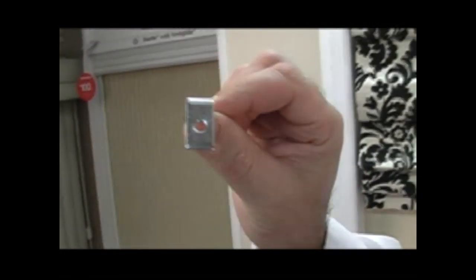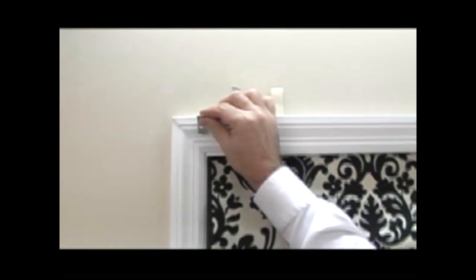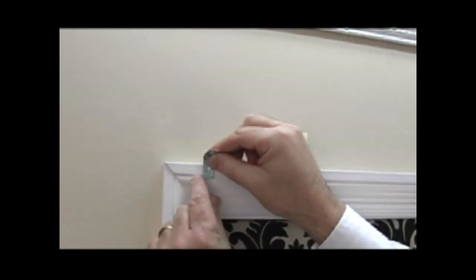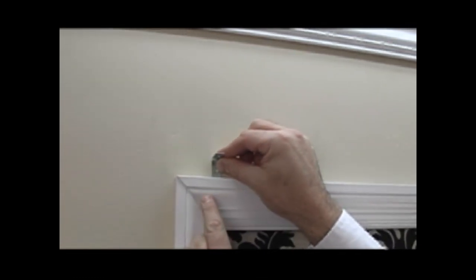Now the L brackets are going to get mounted in one of two places. You're either going to mount them directly onto the window trim like so, if that's how you measured, or you're going to mount them above the window trim depending upon how you decide to mount the shade.